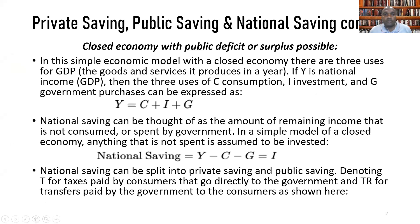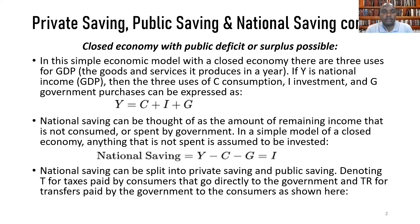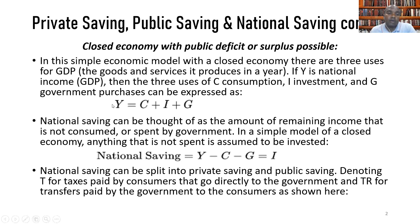In our exposition, we start with the concept of a closed economy, which is either experiencing a public deficit or public surplus. In this simple economic model, there are three uses for national income or GDP produced within a given financial year: household consumption expenditure, investment spending by private sector firms, and government expenditure. This implies that national income is equal to C plus I plus G, known as the national income identity.